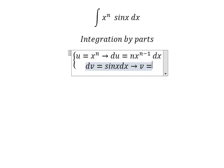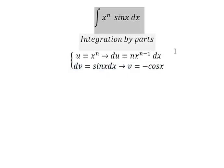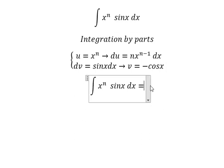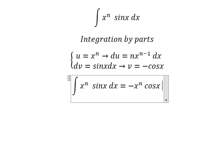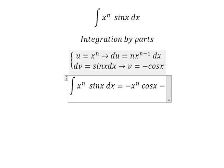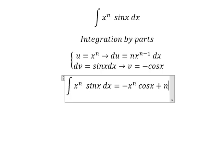We have v equals to negative cosine x. So we have u multiplied by v minus we have du multiplied by v. So negative and negative in here we have positive, and now we have n, and later that we have the integration x to the power of n minus 1 cosine x dx.